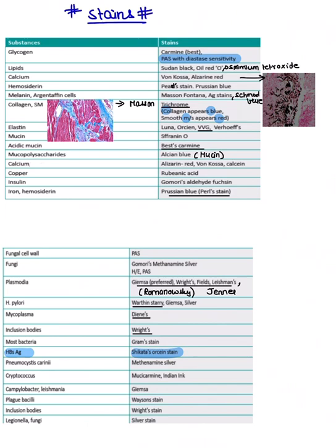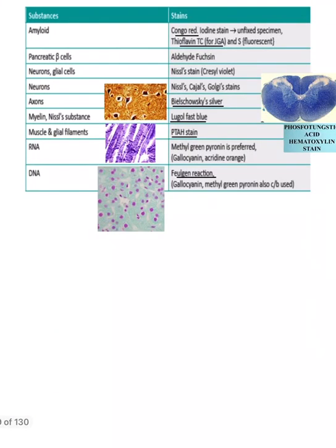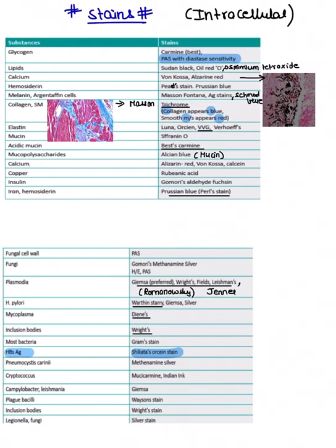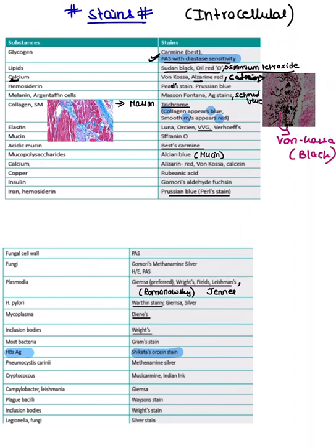Now moving to stains and intracellular accumulations. Glycogen stains: PAS-positive, diastase-sensitive — very important. Lipids: stained with Sudan black B, Oil Red O, and osmium tetroxide; Oil Red O and osmium both have 'O' for oil. Calcium stains: alizarin red, calcein, and von Kossa stain — von Kossa stains black; remember 'kala' means black. Hemosiderin: Pearl's Prussian blue — shows blue deposits.